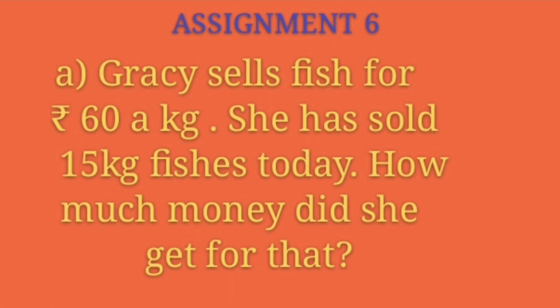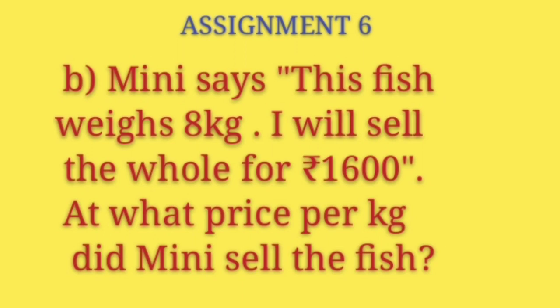Children, now it's time for the assignment. First question: Gracie sells fish for 60 rupees per kg. She has sold 15 kg of fish today. How much money did she get? Read the question and find what is given and what is to be found out. Second question: Minnie says the fish weighs 8 kg; she will sell the whole for rupees 1600. At what price per kg did Minnie sell the fish? Read the question twice, find what is given and what is to be found out. Thank you and have a nice day.